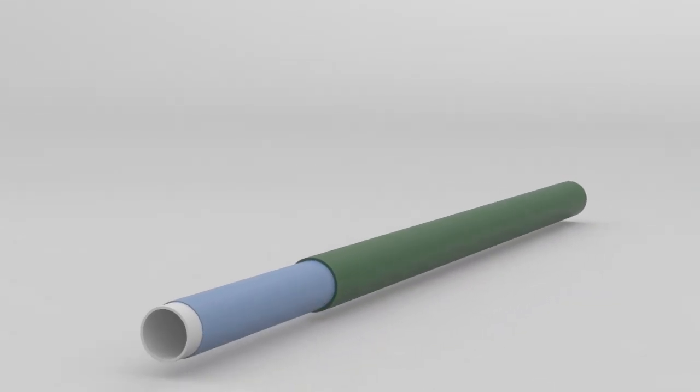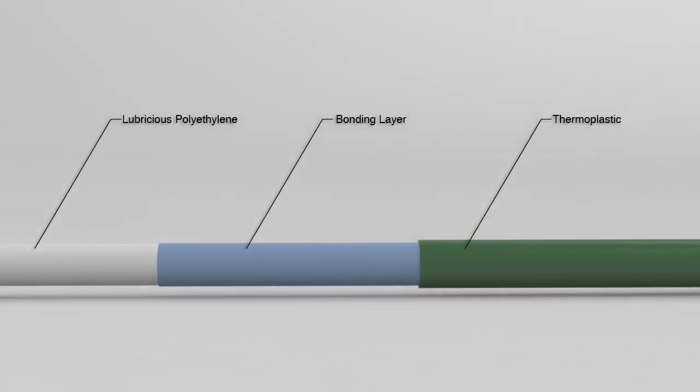The PTFE layer is replaced by a tri-layer extrusion with lubricious polyethylene on the inside, a bonding layer, and thermoplastic on the outside.